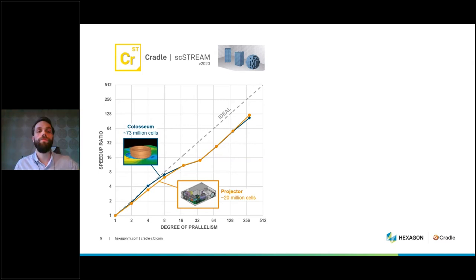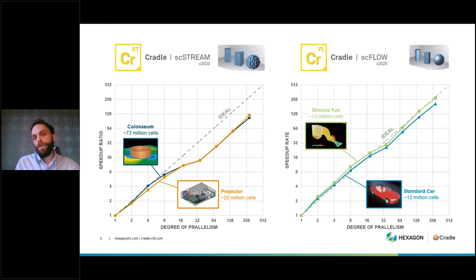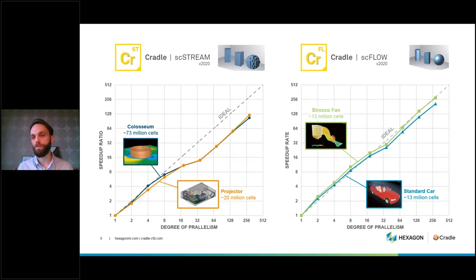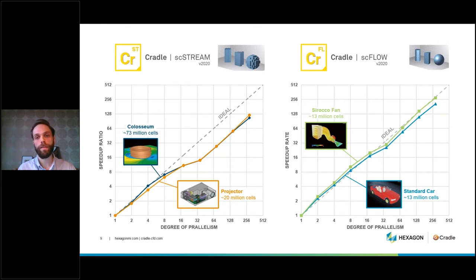We see the Colosseum model with roughly 73 million CFD cells. SC/Flow also has a near-linear parallelization scheme, and we see two common examples — one from the automotive industry. One might ask why use SC Stream if both codes have good speedup ratios. The key point is that the actual wall time — from job submission to result files — for the Colosseum and the standard car and fan models is roughly the same, even though the Colosseum model is much larger.